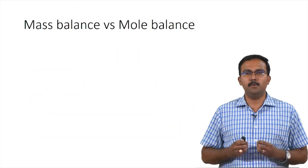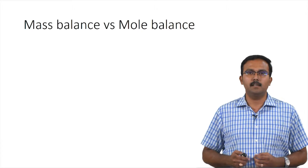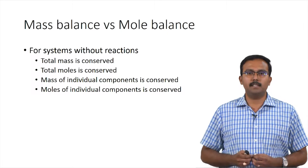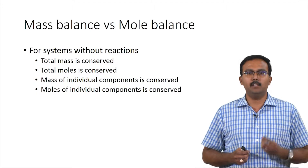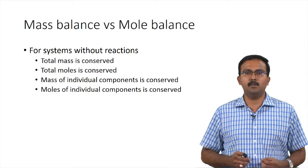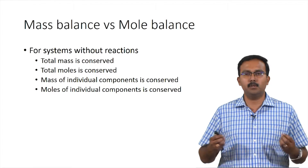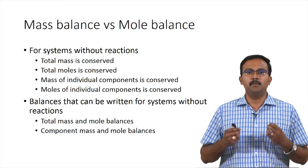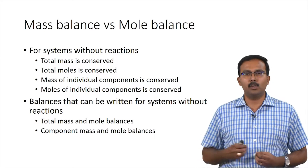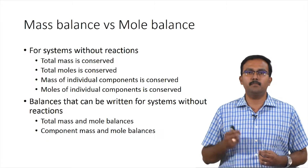The next concept to look at is what balance do we write — a mass balance or a mole balance, and for what systems these would be valid. For systems without reactions, it does not matter; both total mass and total moles are conserved. Mass and moles of individual components are also conserved, because there are no reactions and generation and consumption terms go to zero. You can write total mass balance, total mole balance, and component balances in terms of masses and moles.